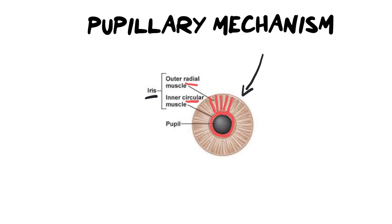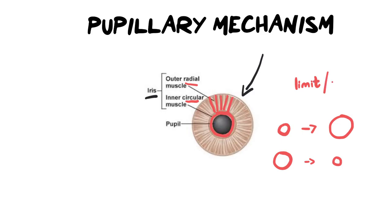Why do we have the pupillary mechanism? We have it because we want to either change the pupil from small to big, or the opposite way, from big to small, because we want to limit or increase the amount of light entering the eye. If too much light enters the eye, the image is blindingly bright and it's very difficult to see. I'm sure you've had that when you go from a dark room into a bright space — it's really bright and difficult to see.